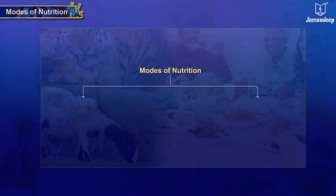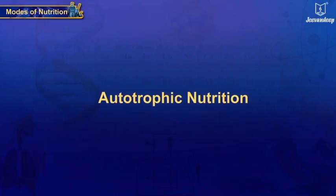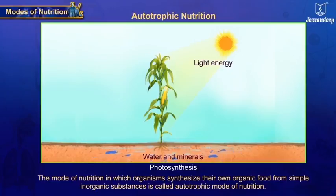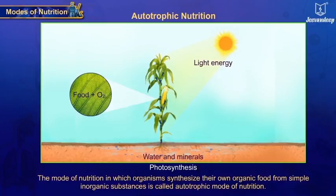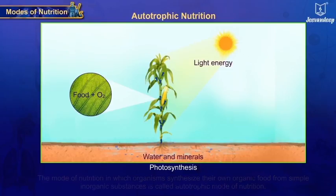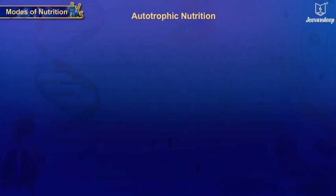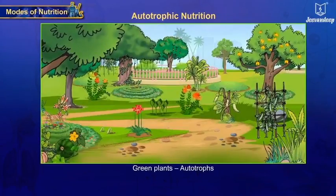There are two modes of nutrition: autotrophic and heterotrophic. One: autotrophic nutrition. The mode of nutrition in which organisms synthesize their own organic food from simple inorganic substances is called autotrophic nutrition. Organisms showing autotrophic mode of nutrition are called autotrophs. All green plants are autotrophs.